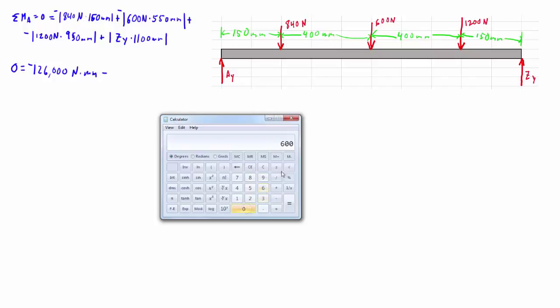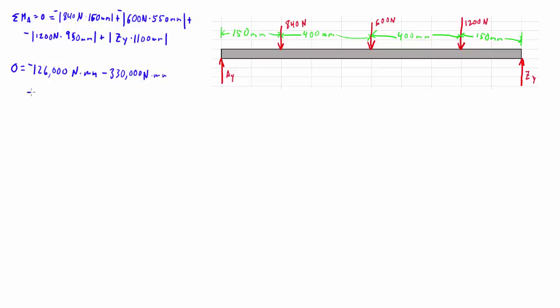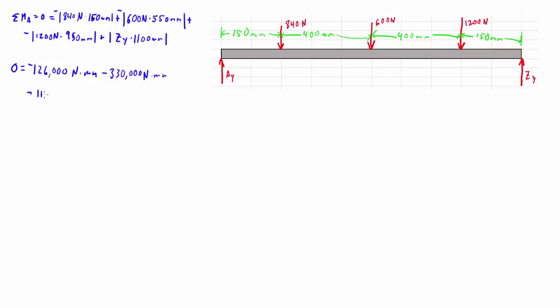We're going to subtract 600 times 550, that's 330,000 Newton millimeters. And we're going to subtract 1200 times 950, and that's 1.14 million of these, so 1,140,000 Newton millimeters, plus ZY times 1100 millimeters. So we can add all these up and then set this equal to the other side.